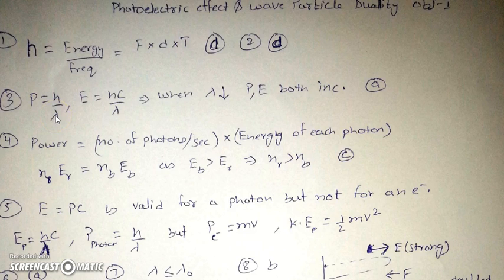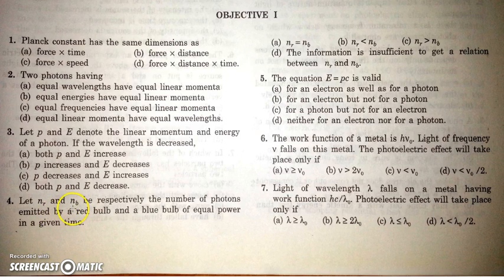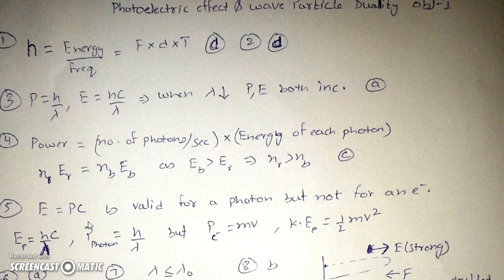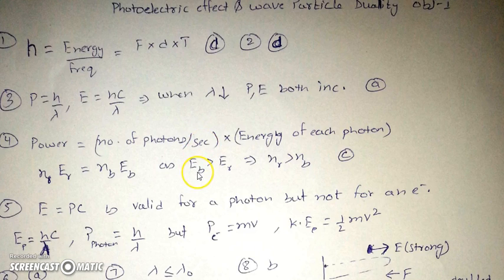The next question: N_R and N_B are the number of photons emitted by a red bulb and a blue bulb of equal power in a given time interval. Power equals number of photons per second times energy of each photon. Energy of a blue photon is greater than energy of a red photon, since wavelength of red is larger and energy is inversely proportional to wavelength.